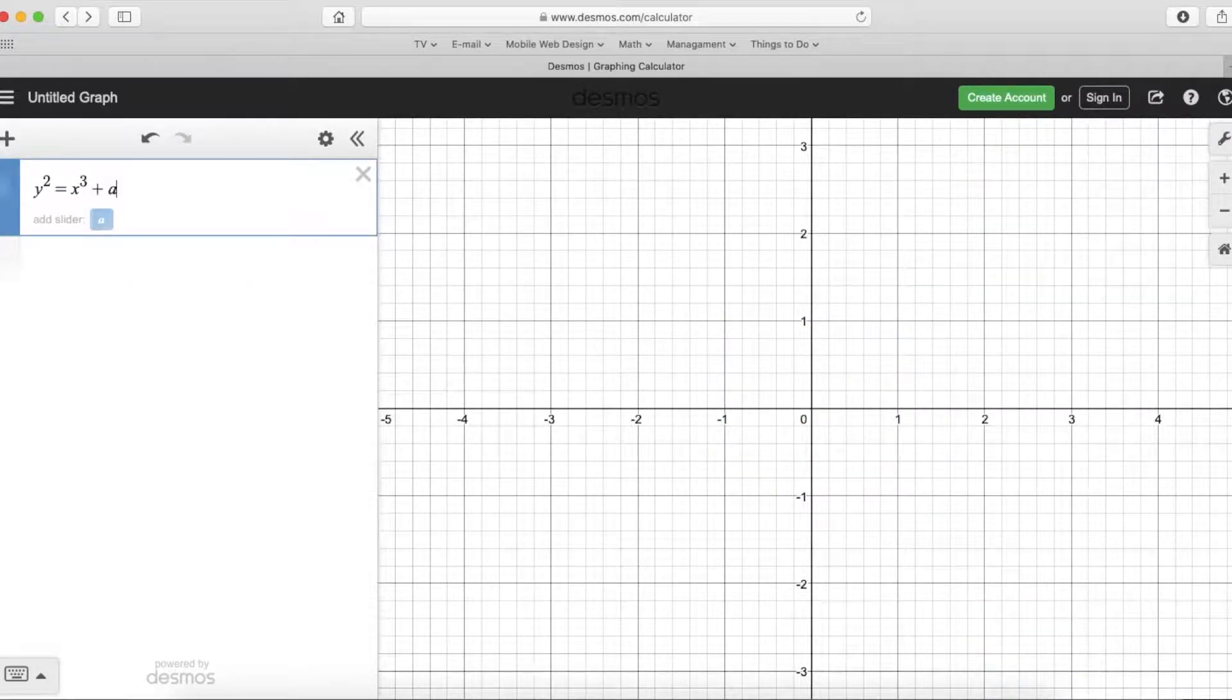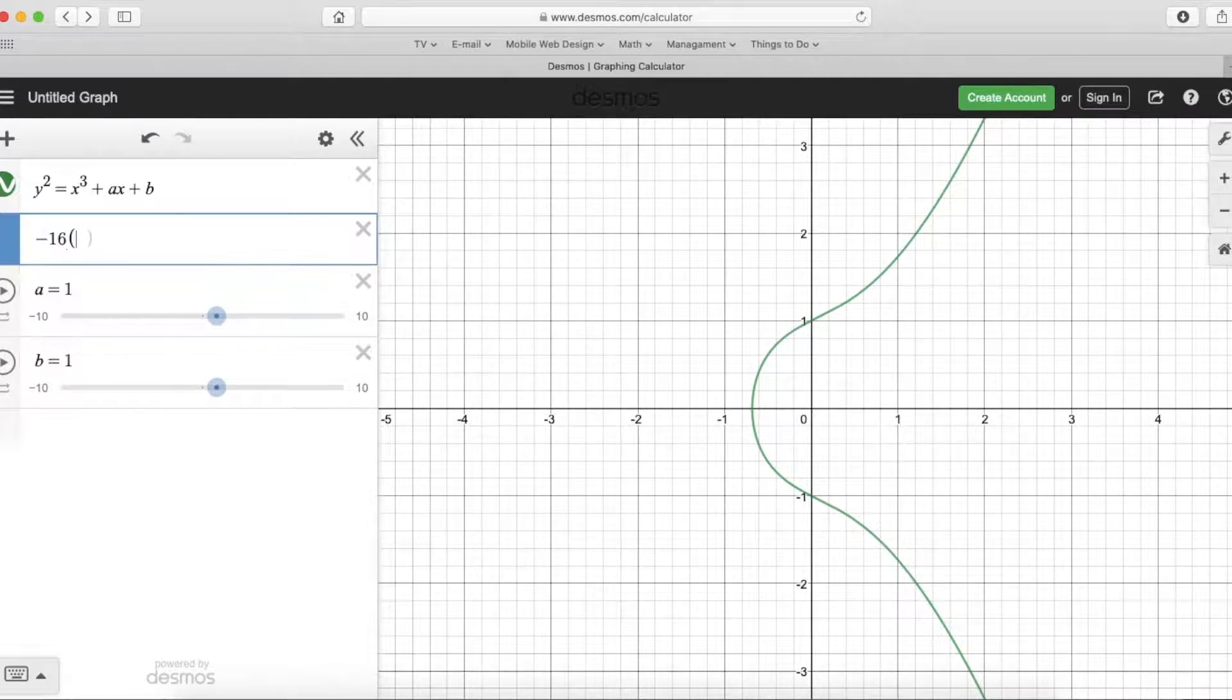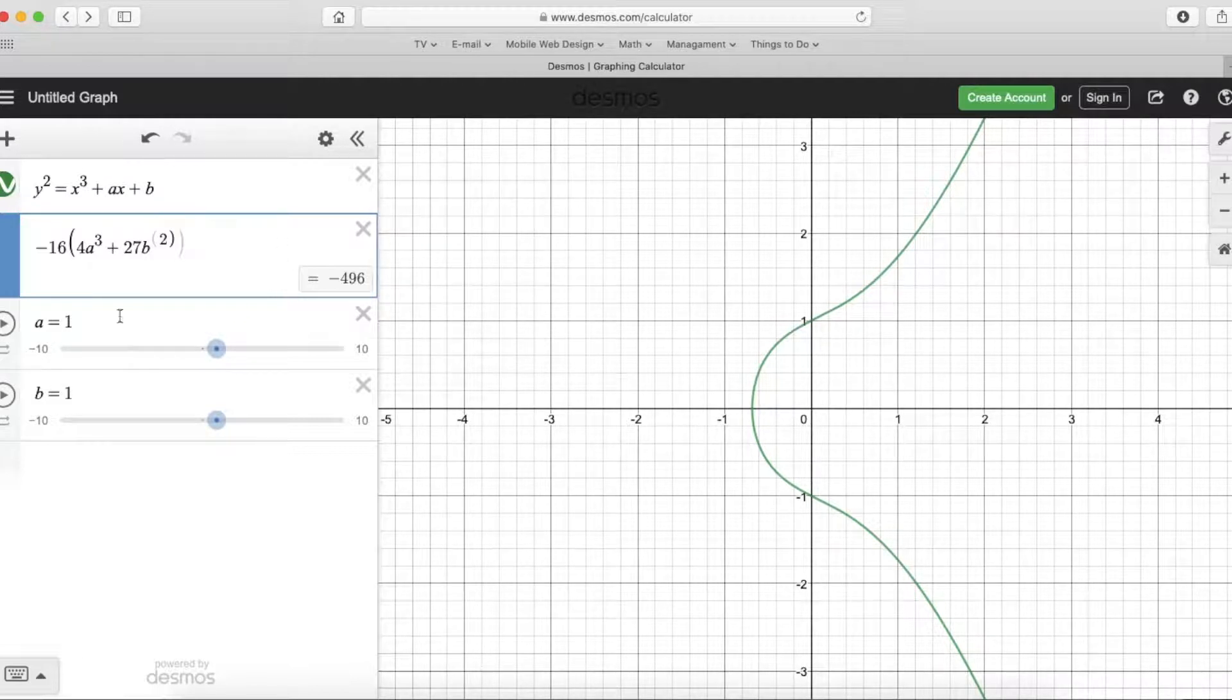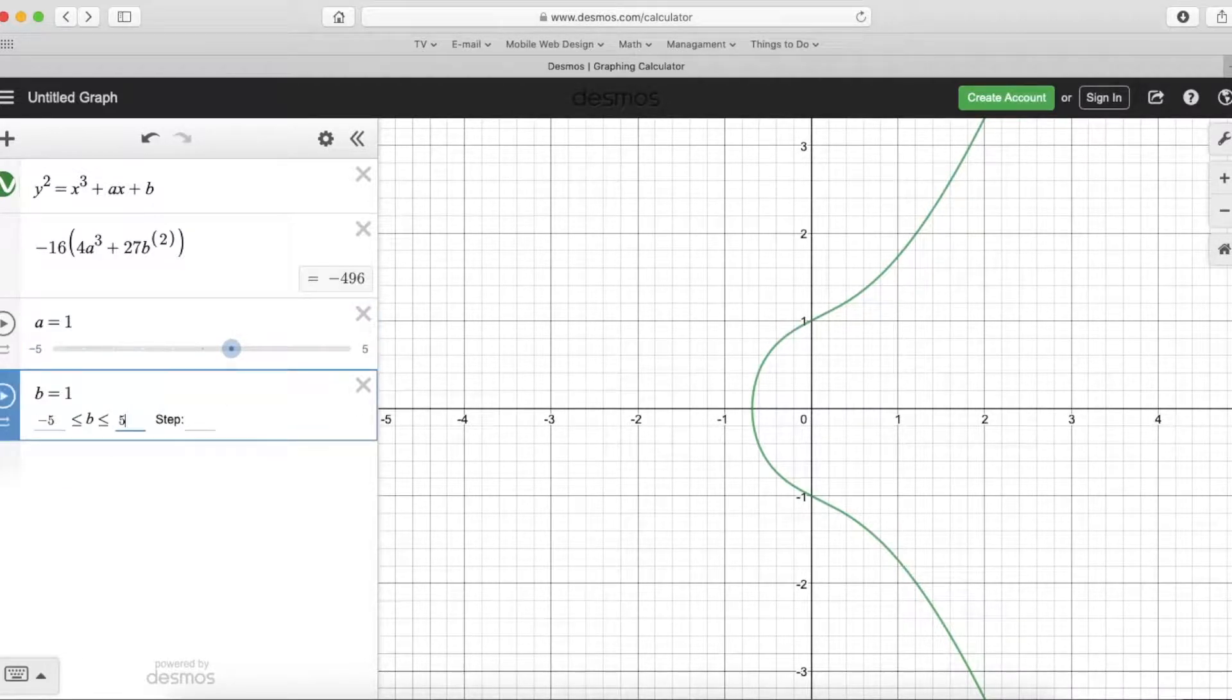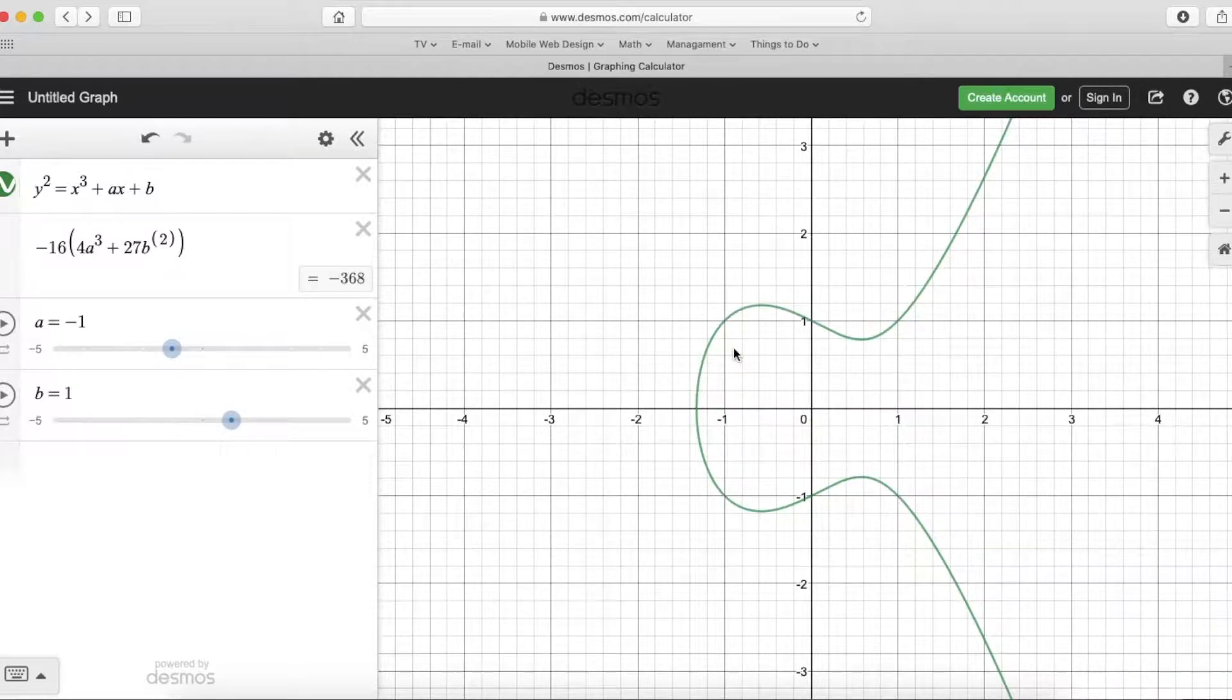Let's put in the standard form with sliders, and then also put in the discriminant -16(4a³ + 27b²). So here we go. The first graph we looked at was a = -1 and b = 0. And you can see with that, the discriminant is positive, it's 64. And that gives us the two pieces. And then if we add one to b, then that makes it one piece.